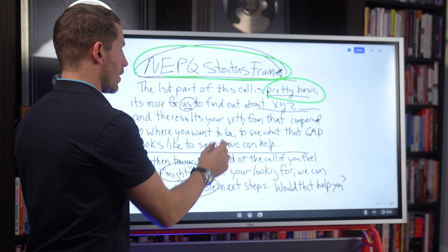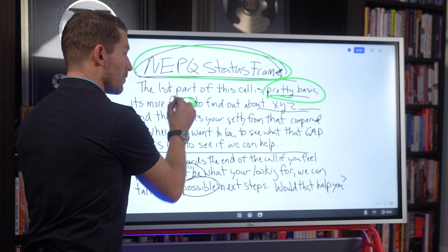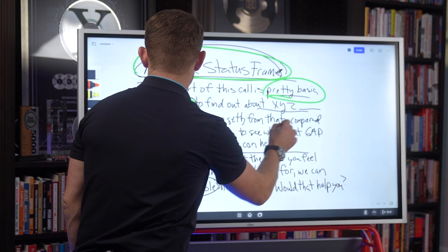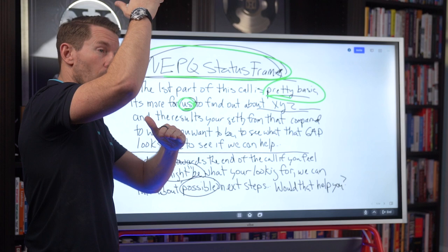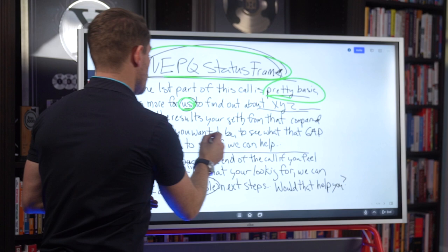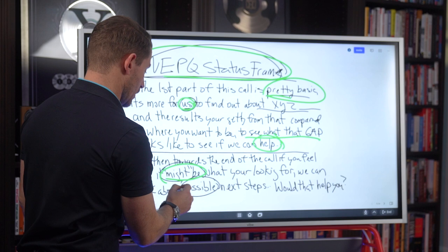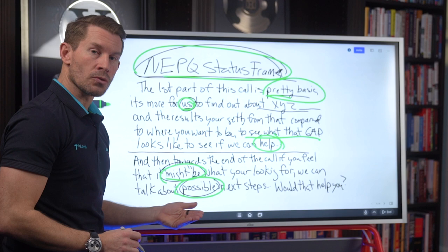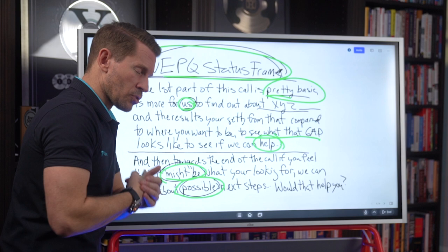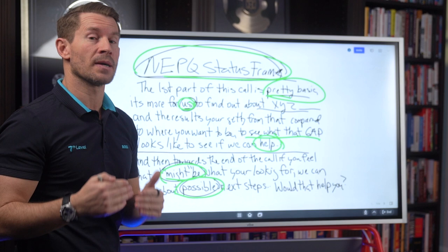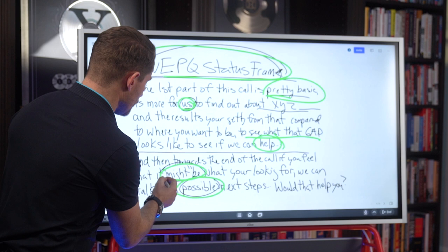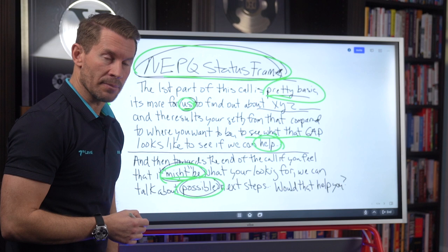'It's more for us' — not 'for me.' 'Us' is collaborative, you and the prospect. 'To find out about XYZ and the results you're getting from that compared to where you're wanting to be' — notice I'm already putting a gap in their mind. 'To see if we can help' — you're all about help. Then, 'if you feel that it might be what you're looking for, we can talk about possible next steps.' 'Might be' and 'possible' are neutral terms. Nobody's going to stop the call and say they're not interested in possible next steps — they can't, because it's a neutral term.